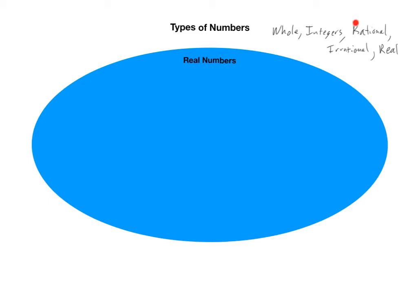The largest set among these five is the set of real numbers. This blue bubble represents the set of all real numbers — this is our setting for doing algebra. We will not be doing any algebra outside the set of real numbers. Real numbers are any number that can be written or approximated by a decimal.